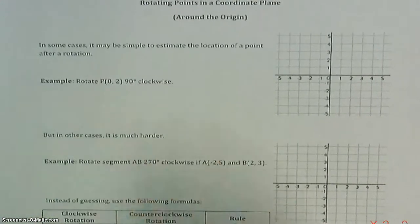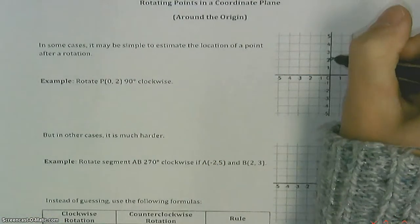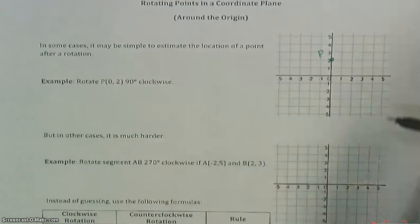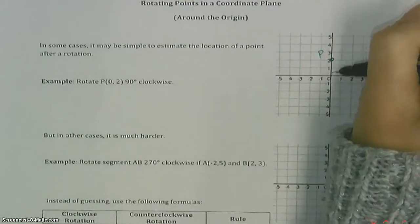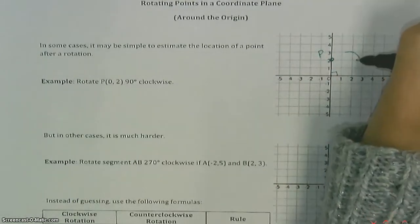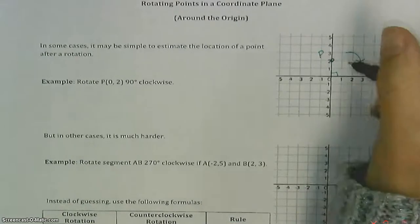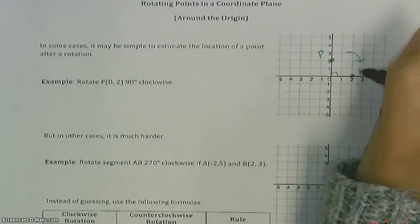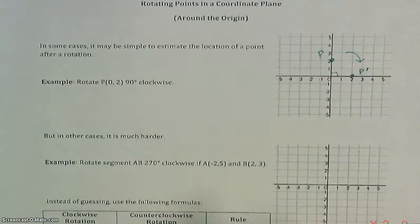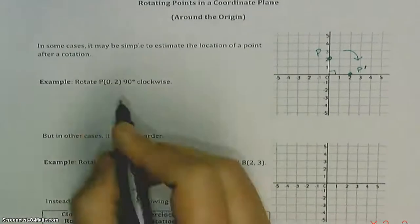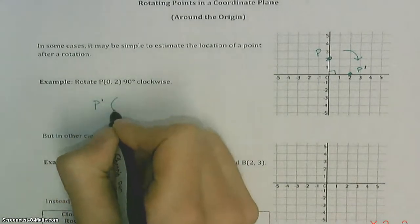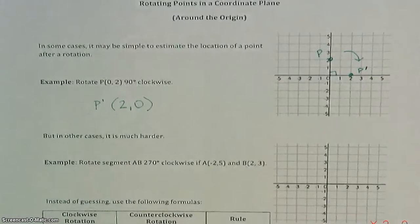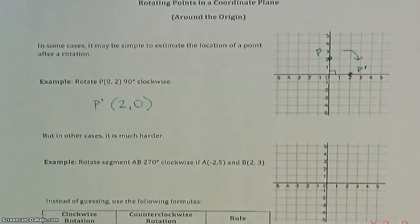Here's an example — point P at (0, 2). We're going to rotate it 90 degrees clockwise. Going 90 degrees clockwise, it ends up right here — P prime is at (2, 0). That wasn't so bad, pretty easy to do.